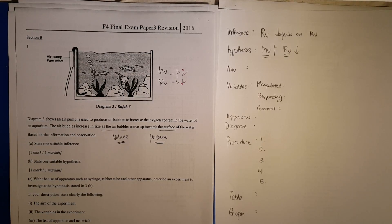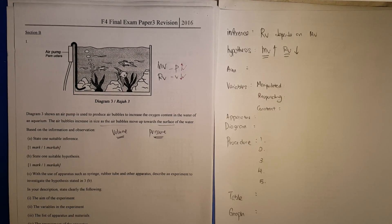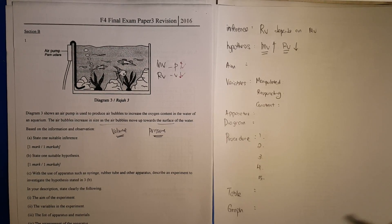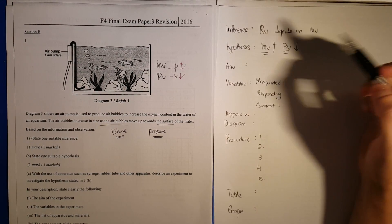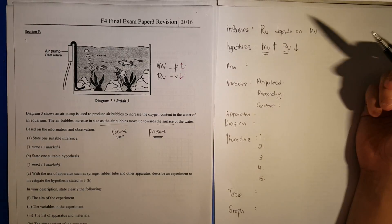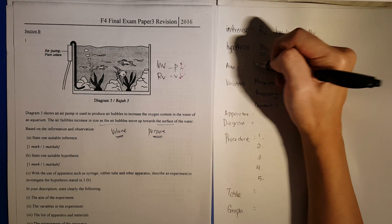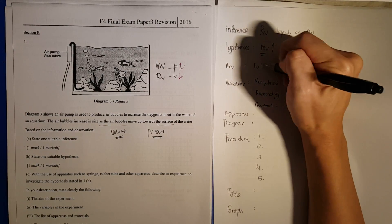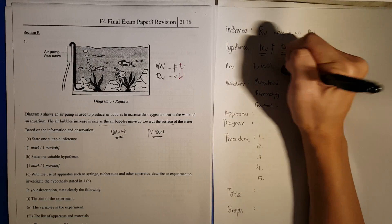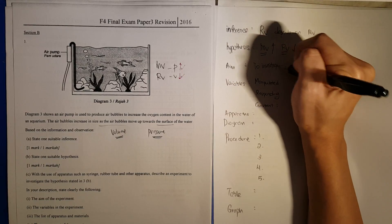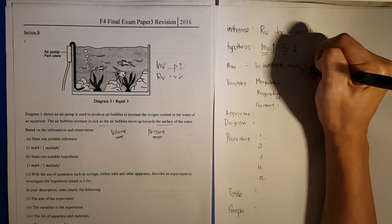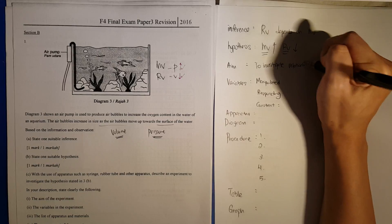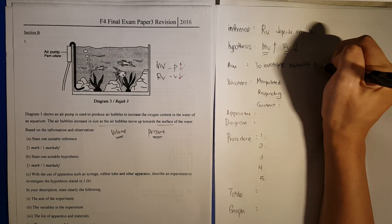This is Part 3. We stopped just now on the responding variable and talked about the dependency of the variables. Now we go into the aim. Aim is basically just to investigate the relationship between your manipulated variable and your responding variable.